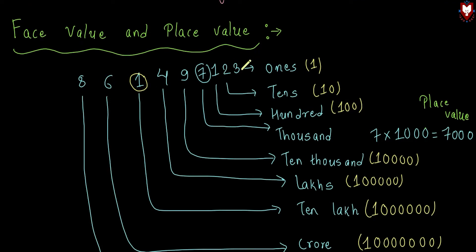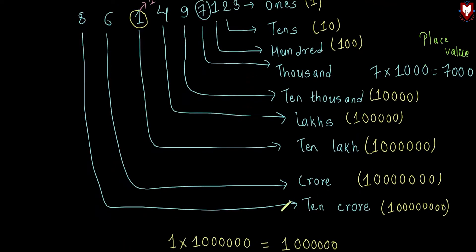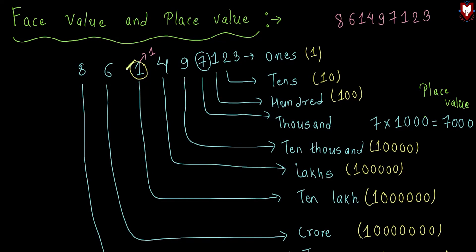So example-wise, as a whole, we have all digits and numbers: 8, 6, 1, 4, 9, 7, 1, 2, 3. The face value of a digit is the digit itself — for example, face value of 1 is 1. The place value of 1 is 1 into 10 lakh, that means 10 lakh.